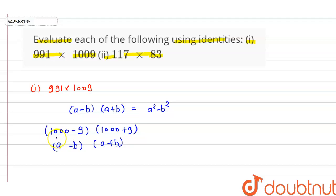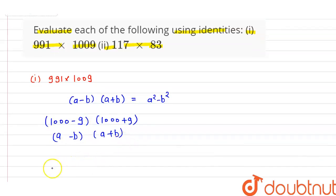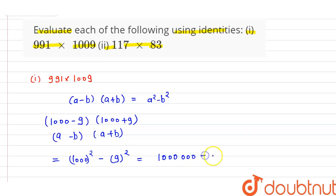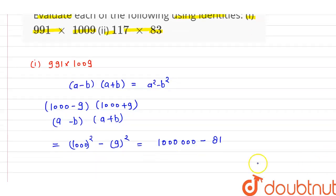So let 1000 be a and 9 be b. We can write it as 1000 squared minus 9 squared, which gives 1000000 minus 81. When we simplify this, we get the value of 991 into 1009, which is 999919. This is the answer to the first part.